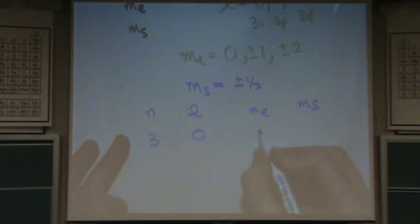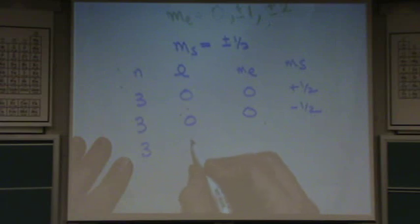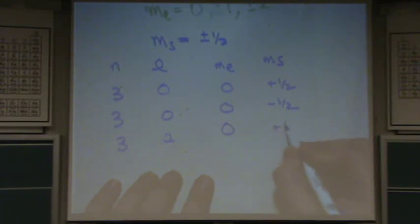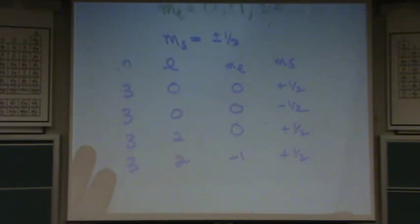So you could have, for example, if I make a little table here, just for fun, M sub L and M sub S. If N is three and L is zero and M sub L is zero, then you could have a plus one half here. That's one set of quantum numbers. Or you could have three, zero, zero, minus one half. That's another set of quantum numbers. Or you could have three, two. If L is two, can you have a zero here? Yeah. So this could be plus or minus one half. Or you could have three, two, minus one, plus one half. So these are all possible sets of quantum numbers.